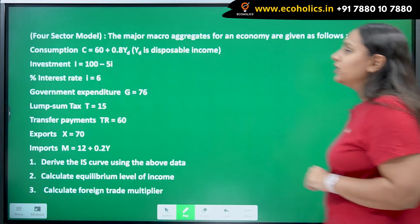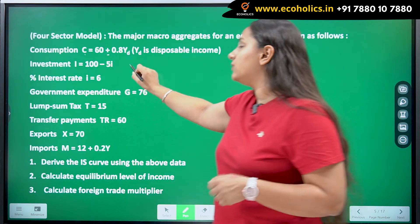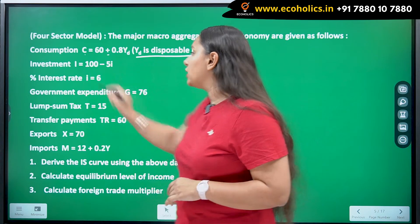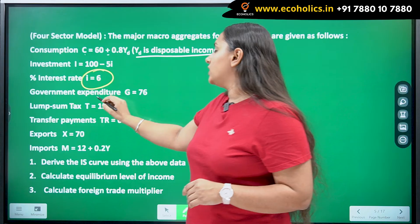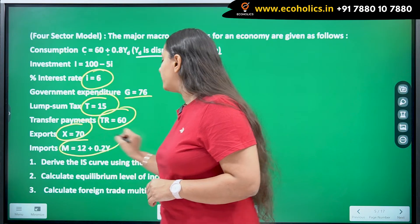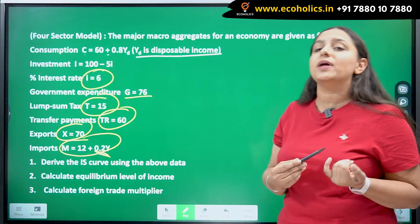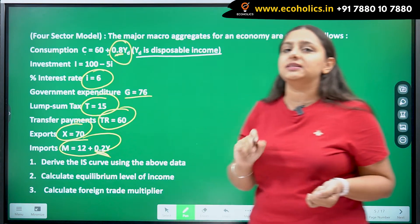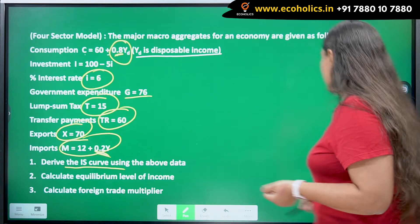Let's get to the question. It's a four sector model in which we are given the consumption function C equals to 60 plus 0.8 Y_D where Y_D is my disposable income. The investment is given as I equals to 100 minus 5i. Interest rate is also given to me. Then we are given with government expenditure, lump sum taxes, transfer payments, exports and this is the import function which is given. This 0.2 over here in the import function is my marginal propensity to import. Similarly, 0.8 over here is my marginal propensity to consume. We have to first find out the equation for IS curve using this given data.